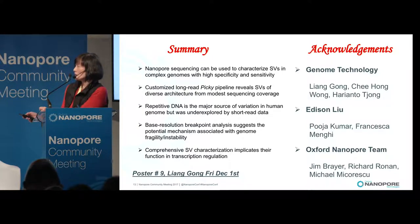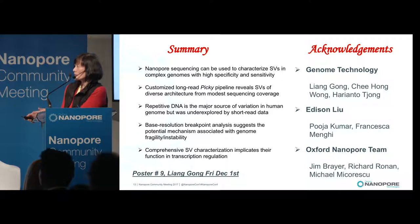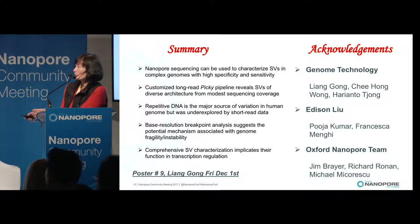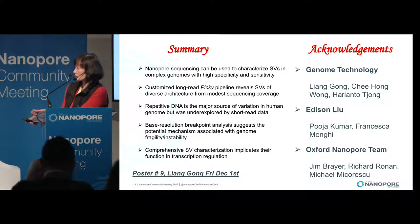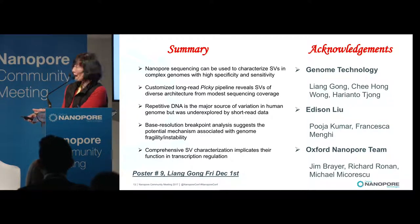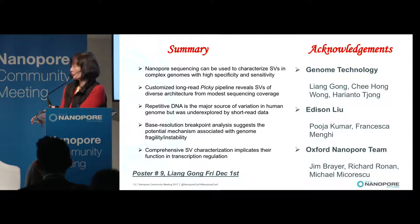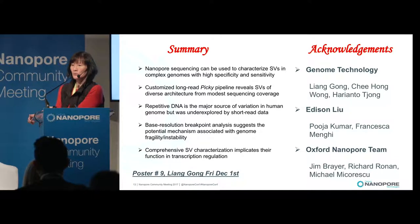In summary, we can characterize structural variation using nanopore sequencing with high specificity and sensitivity. We generated a customized pipeline that derives a full, diverse range of structural variation architectures from very modest sequencing coverage. We find that repetitive DNA is the major source of human genome variation, which was not previously explored by short-read data. We generate base-resolution breakpoints allowing us to look at micro-insertions, micro-homology, and genome fragility and stability in relation to transcription and regulation. More detailed slides and further work will be presented tomorrow at poster number 9. This work is a joint effort with cancer biologists at Jackson Laboratory and the Genome Technology Group, and we are grateful for all the support from Oxford Nanopore. Thank you.